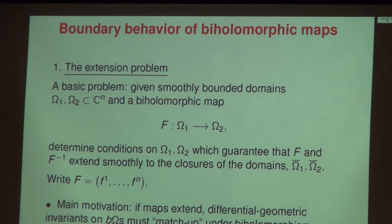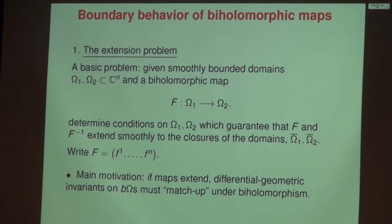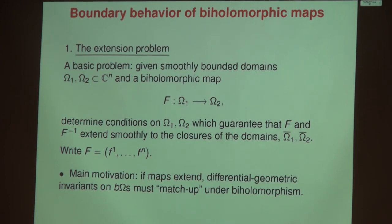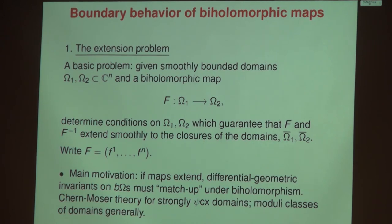The main motivation, of course, is that there's no Riemann mapping theorem in dimensions higher than one. If there was a positive answer to the extension problem, you can then attach differential geometric invariants to the boundary related to the Levi form and decide which two domains are bi-holomorphic. Some of you will know Chern-Moser theory on strongly pseudoconvex domains — this is an example of that kind of matching of invariants. In general, we might hope for moduli classes of bi-holomorphically distinct domains, but that's a future project.